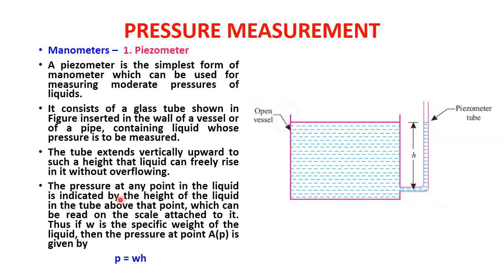The pressure at any point in the liquid is indicated by the height of the liquid in the tube above that point, which can be read on the scale attached to it. If w is the specific weight of the liquid, then the pressure at point A is given by P = w × h.